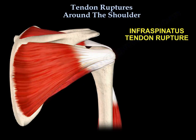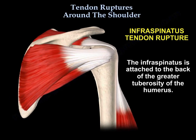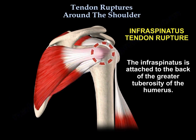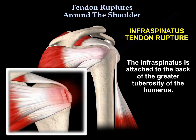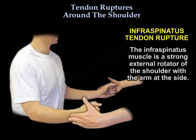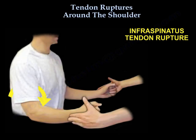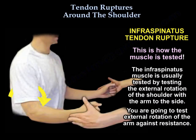The infraspinatus is attached to the back of the greater tuberosity of the humerus. It is a strong external rotator of the shoulder with the arm at the side, and this is how the muscle is tested. The infraspinatus muscle is usually tested by testing external rotation of the shoulder with the arm to the side, against resistance.